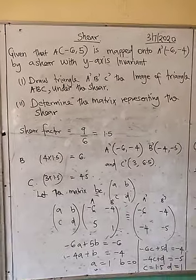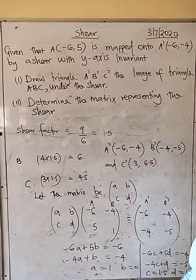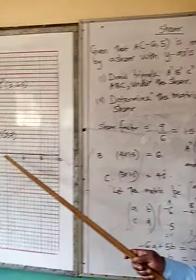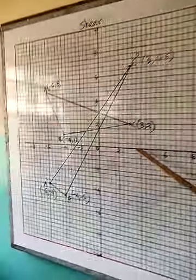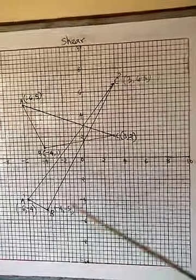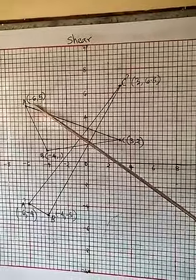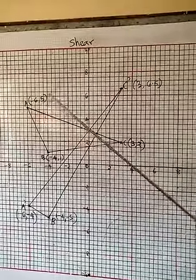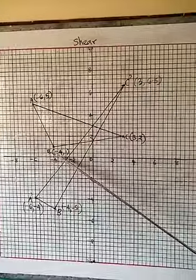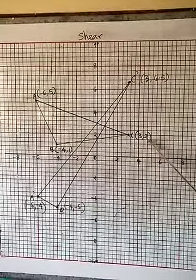Now, we are given a diagram drawn on the Cartesian plane. Point A is negative 6, 5; B is negative 4, 1; and C is 3, 2.